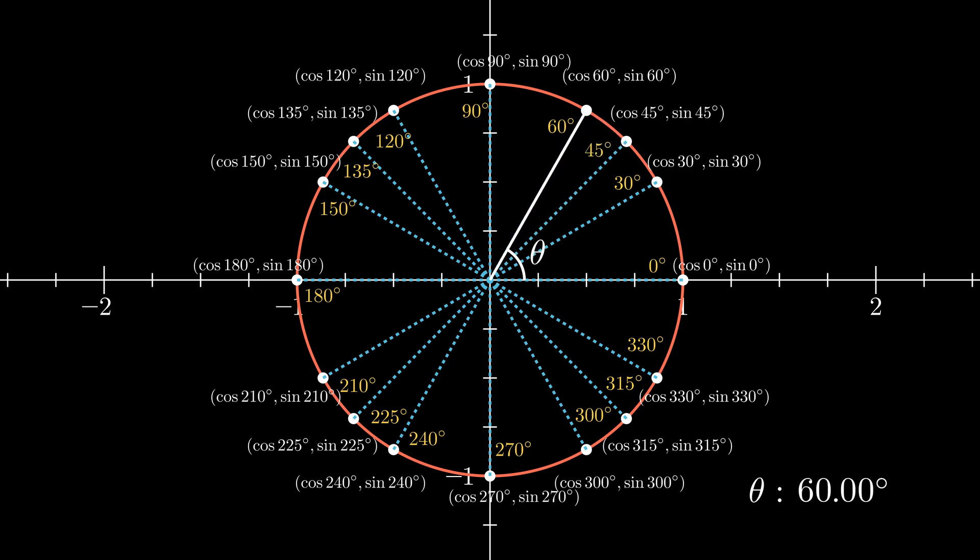But sine and cosine are trigonometric functions—trig, as in triangle. What are they doing in a shape with a distinct lack of three sides and three angles? Here I'd like to explore where the connection lies between triangles and unit circles, and how you might have been able to discover it for yourself.